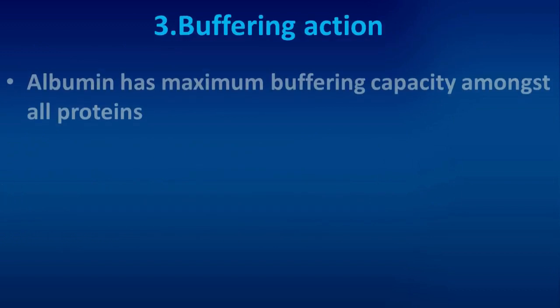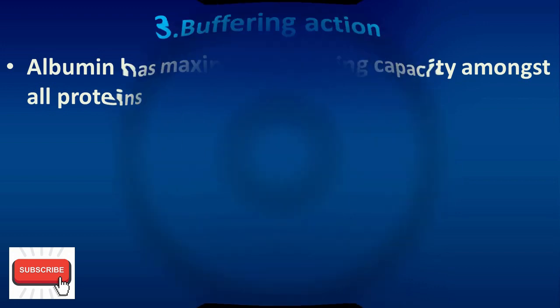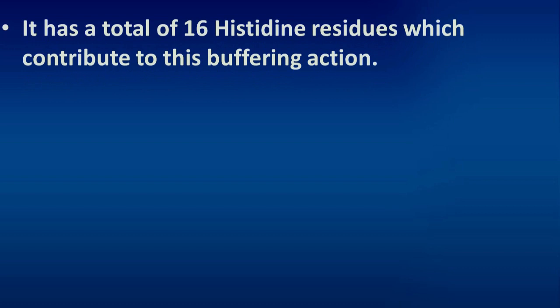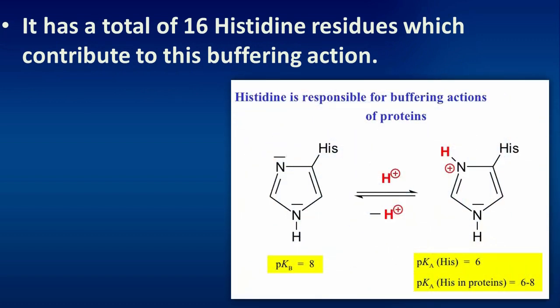Albumin has a buffering action and has the maximum buffering capacity amongst all proteins. It has a total of 16 histidine residues, which contribute to this buffering action.